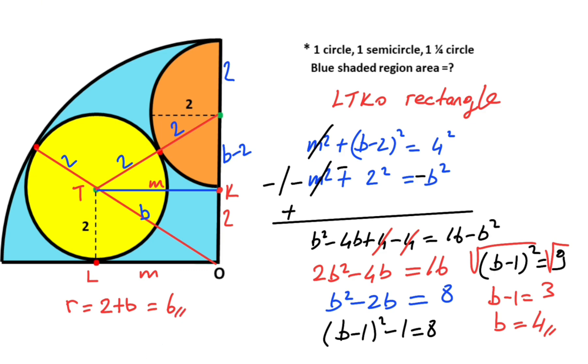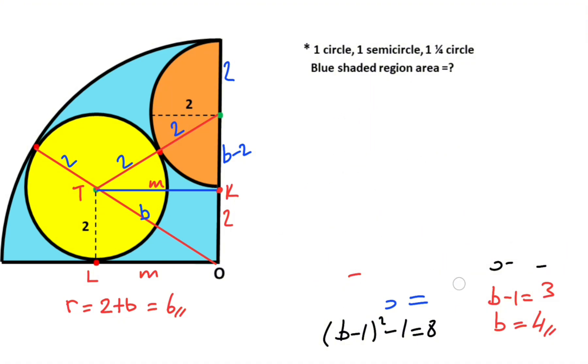That means point K is a tangent point, right, okay. Let's clear here. So now we can calculate the blue shaded region area easily, right?